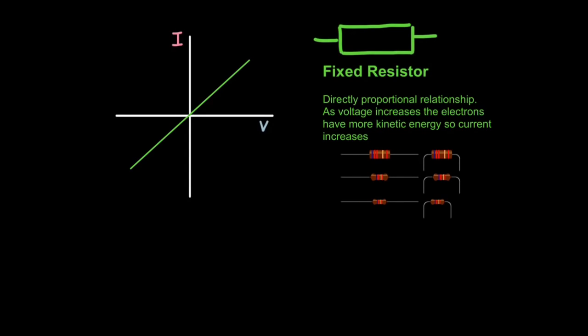But you get different types of resistors. Some have a high resistance to current, others have a low resistance to current. And that will affect the steepness of the line. It will either be like this or this. But you'll always get a straight diagonal line indicating a directly proportional relationship.